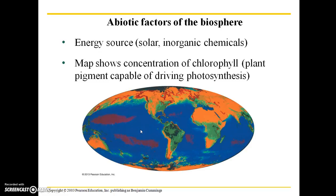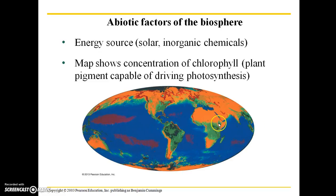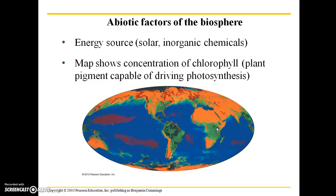This map shows the concentration of chlorophyll — the plant pigment capable of driving photosynthesis. The green and dark green represent high concentrations of chlorophyll; orange and red represent low concentrations. Right around the equator there is going to be a lot of plant life, because a lot of solar radiation reaches those areas. You'll see that the rainforests of Africa and South America fall within the areas where there is a lot of chlorophyll.